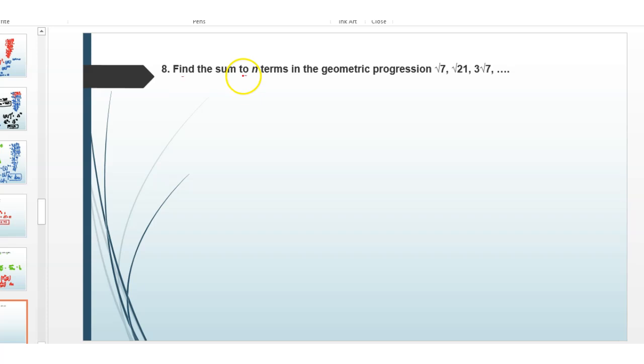Today's question is find the sum of n terms in the geometric progression where the series is root 7, root 21, 3 root 7.